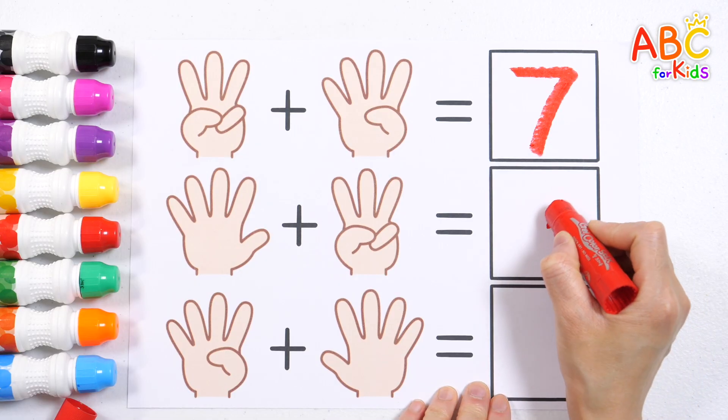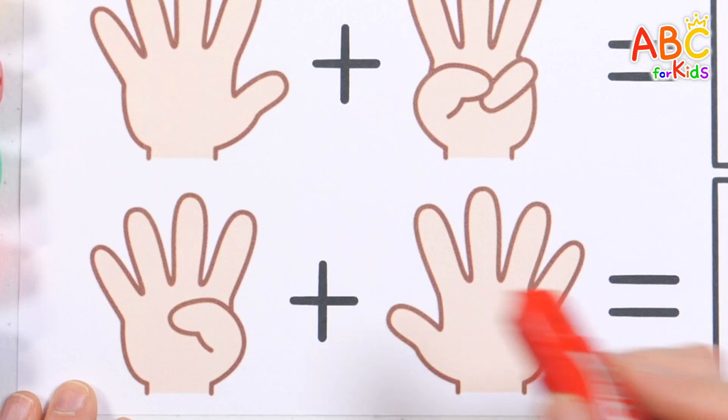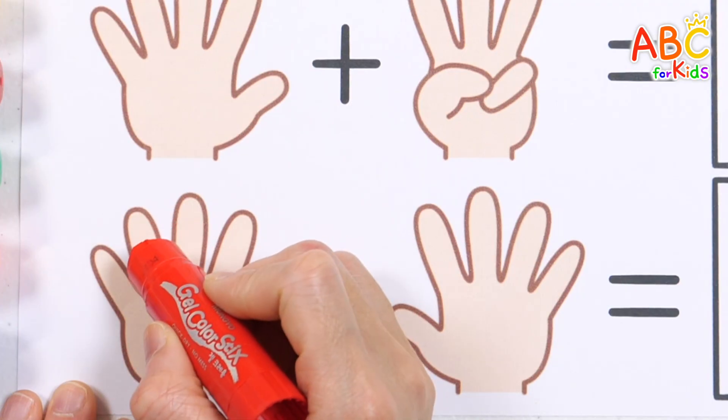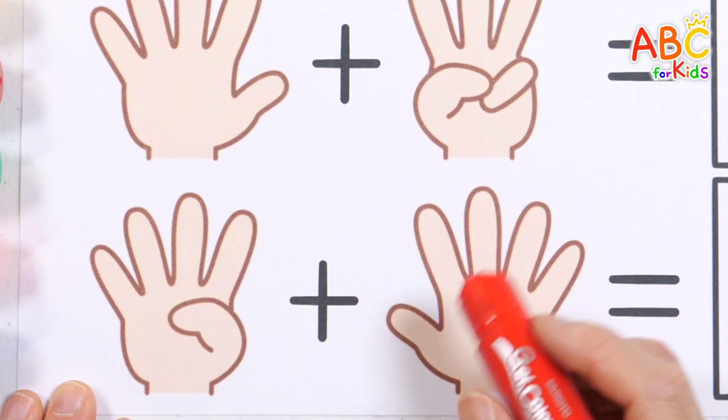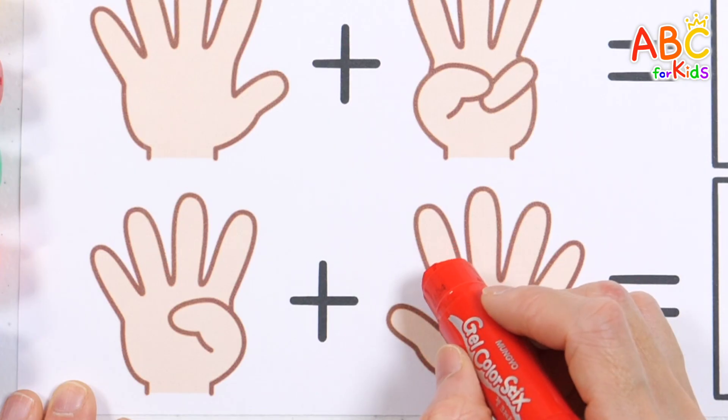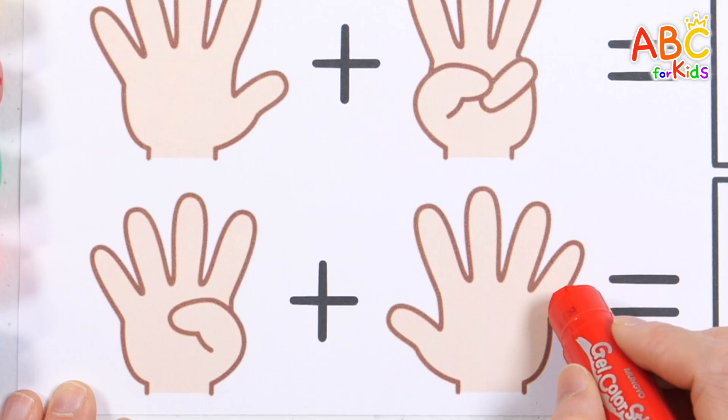Nine. One. Two. Three. Four. Five. Six. Seven. Eight. Nine.